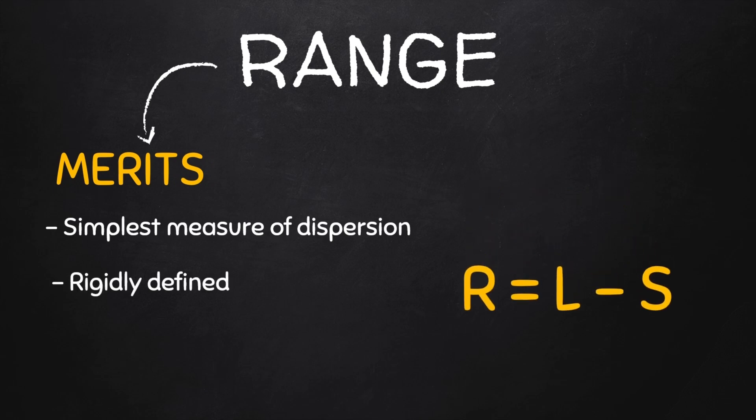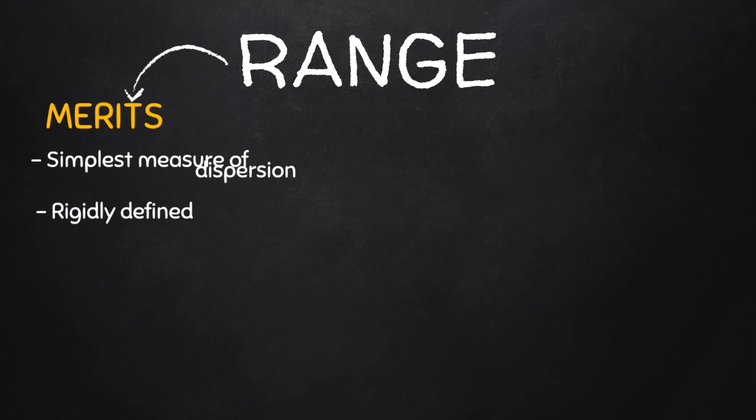Next, the range is rigidly defined as it has only one simple way of doing this calculation, which is the largest value minus the smallest value. There are no two ways about it. It's always just find the largest value and subtract the smallest value from it. You have your range.